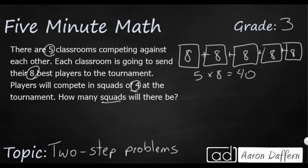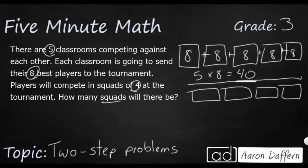Because what's going to happen is those 40 players are then going to compete in squads of four. So if 40 is my total, then I need to break that up into four equal squads. I'm going to draw a little strip diagram right here. 40 is my total. So I need to break that 40 up into four equal groups. So 40 divided by 4 equal groups.